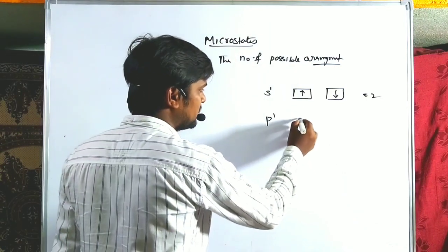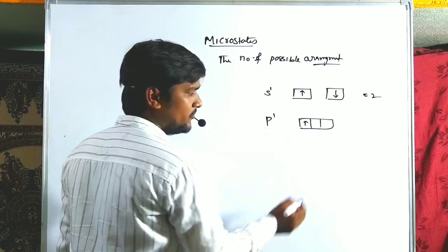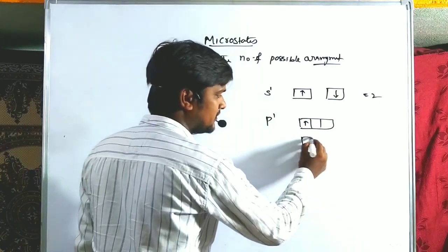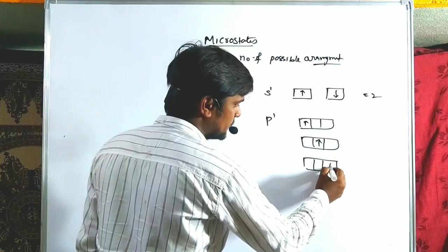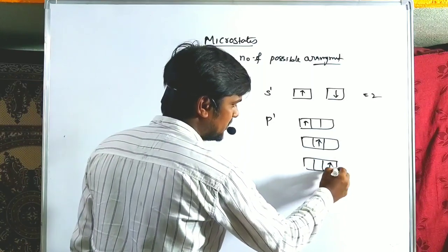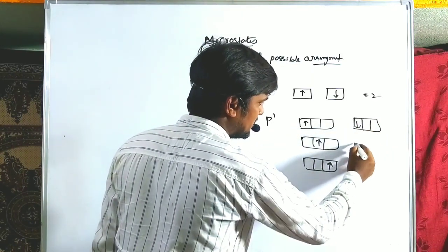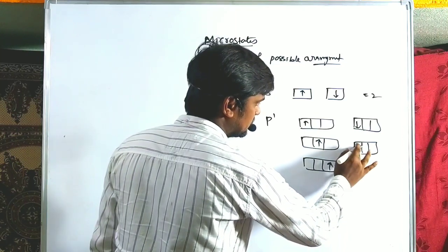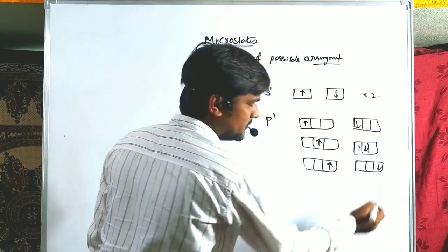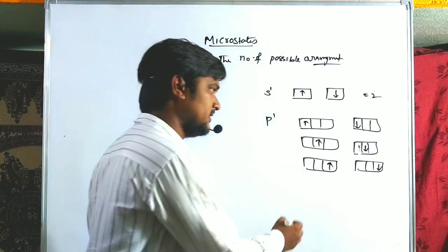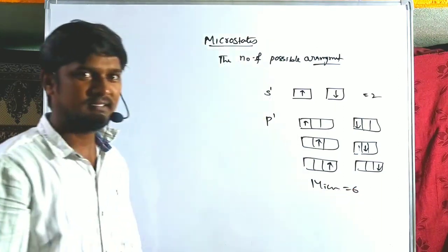Now let us take the P1 configuration. P orbitals are 3; the electron may be oriented in px, py, or pz, or in the opposite spin sense for each of those. So the total number of possibilities — that is, the microstates — is equal to six.